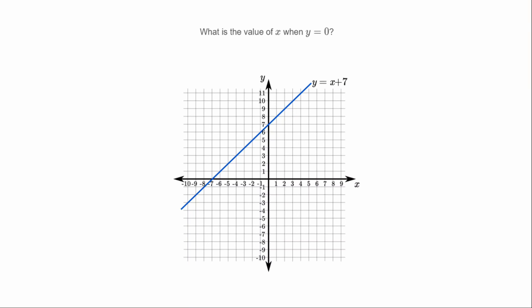The first question asks us what the value of x is when y equals zero. We've got a graph here to make it easier, so let's find y equals zero — that's over here — and we follow the x-axis until we hit the line. The graph is towards the left, so we go left and it hits over here. So x equals negative seven when y equals zero.